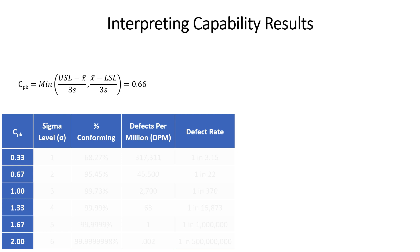Now let's talk about how to interpret results. If we had a CPK value of 0.66, what does that actually mean for your process or what can you tell your customers? I'm showing here a table of common CPK values translated into different metrics around defect rates and conformance rates, including the Sigma level, which represents how many standard deviations are captured above and below the mean.